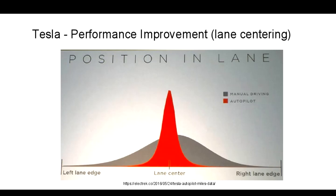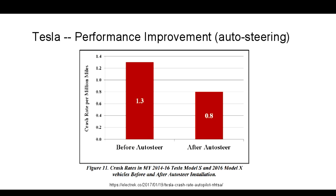Here is a graph showing in gray human lane-centering performance and in red lane-centering performance when autopilot is engaged. Clearly the car is doing a better job at lane centering. More impressive is a chart from the very recently released accident analysis report showing that when auto steering is engaged as part of the overall autopilot functionality, the crash rate per million miles is reduced by 40 percent. That's a remarkable achievement.